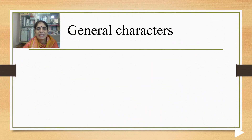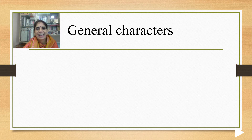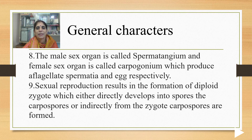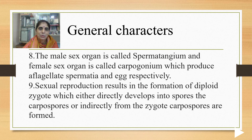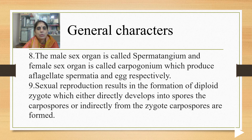Continuing with general characters, we will talk about the sex organs. In algae generally the male sex organ is an antheridium and the female is an oogonium, but here they are different. The male sex organ is called spermatangium and the female sex organ is called carpogonium. Both produce aflagellate gametes: the male gamete is called a spermatium (plural: spermatia) and the female gamete is the egg. Sexual reproduction results in a diploid zygote, which either directly or indirectly develops into carpospores.